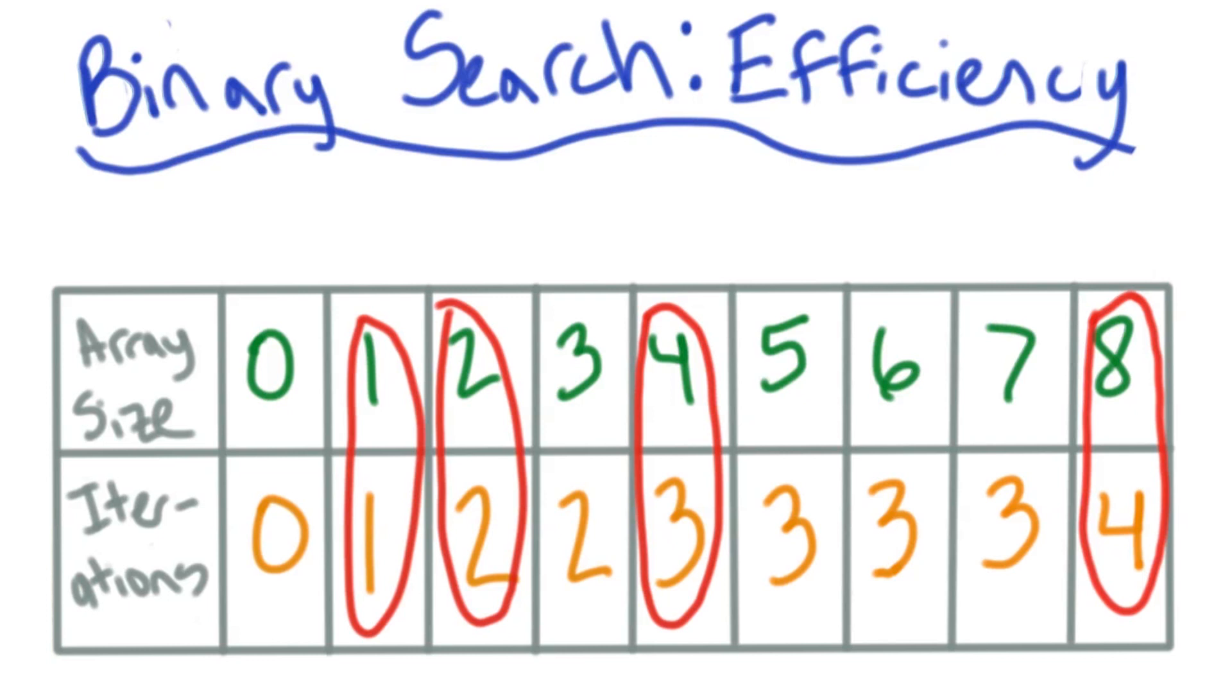The worst thing you can do in an interview is say, I've never seen this algorithm before, or I don't know how to write a proof for it. If you're down on your luck and you really don't know what the answer is, please make a results table and try to figure it out.